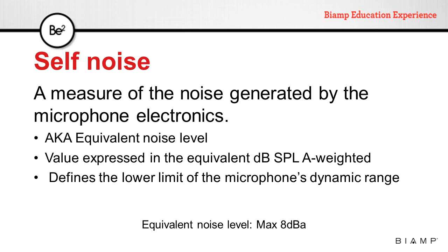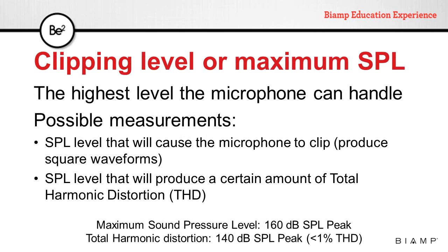The clipping level or maximum SPL is the other end of the dynamic spectrum of the microphone — the highest level the microphone can handle. There are a couple of possible measurements for this spec: the SPL level that will cause the microphone to clip or produce square waveforms, or the SPL level that will produce square waveforms at a certain amount of total harmonic distortion. For instance, a microphone might specify a maximum SPL of 160 dB SPL peak.